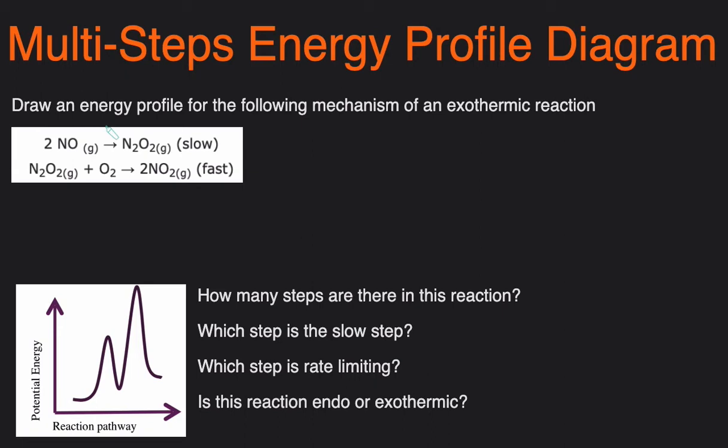Let's take a look at the first example. The first question is asking us to draw an energy profile for the following mechanism of an exothermic reaction. We can see that this reaction happens in two steps. The first step is slow and then the second step is fast.